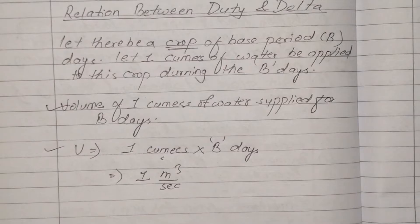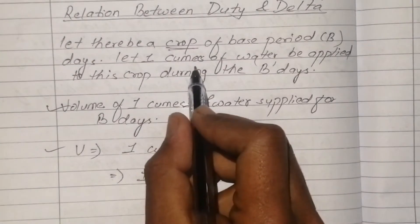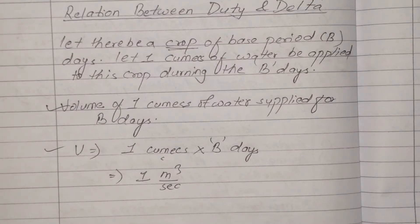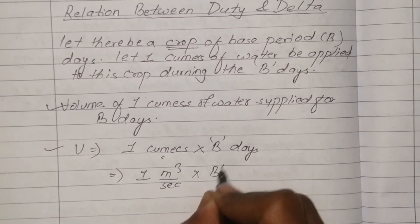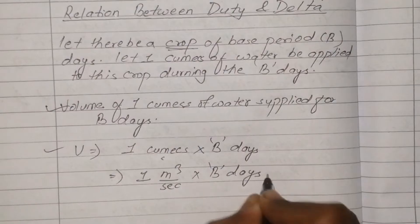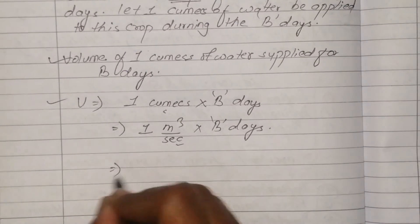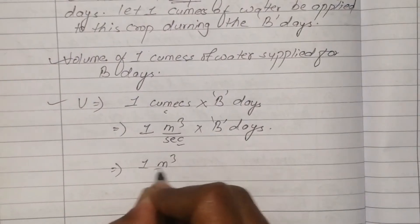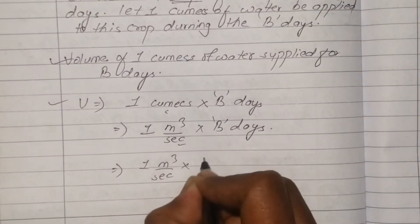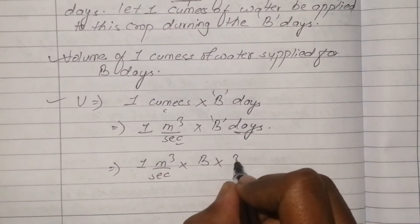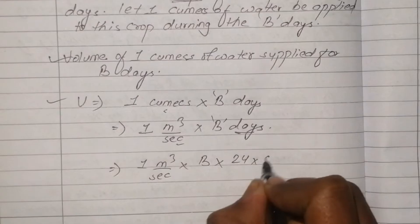1 cumec equals 1 m³/second. The volume of 1 cumec supplied for B days equals 1 × B × 86400 m³, since there are 86,400 seconds in one day (24 hours × 60 minutes × 60 seconds).